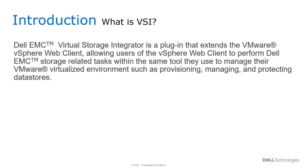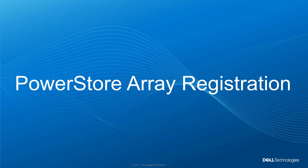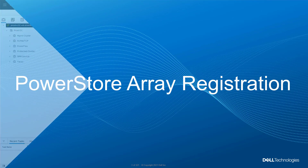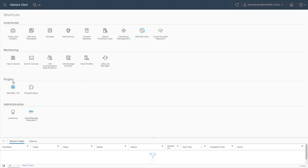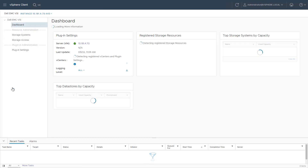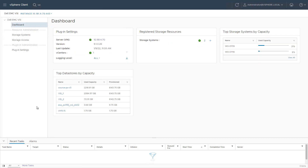The new version of the plugin can be downloaded from the Dell support site as an OVA file. Once deployed, all you need to do is refresh the browser and then you can start using it. For the purpose of this demo, I'm using vSphere 7 Update 3 with multiple ESXi hosts and clusters. From the vSphere client, I click on the Dell EMC VSI icon, which takes me to the main dashboard where I can find some useful information about my environment.